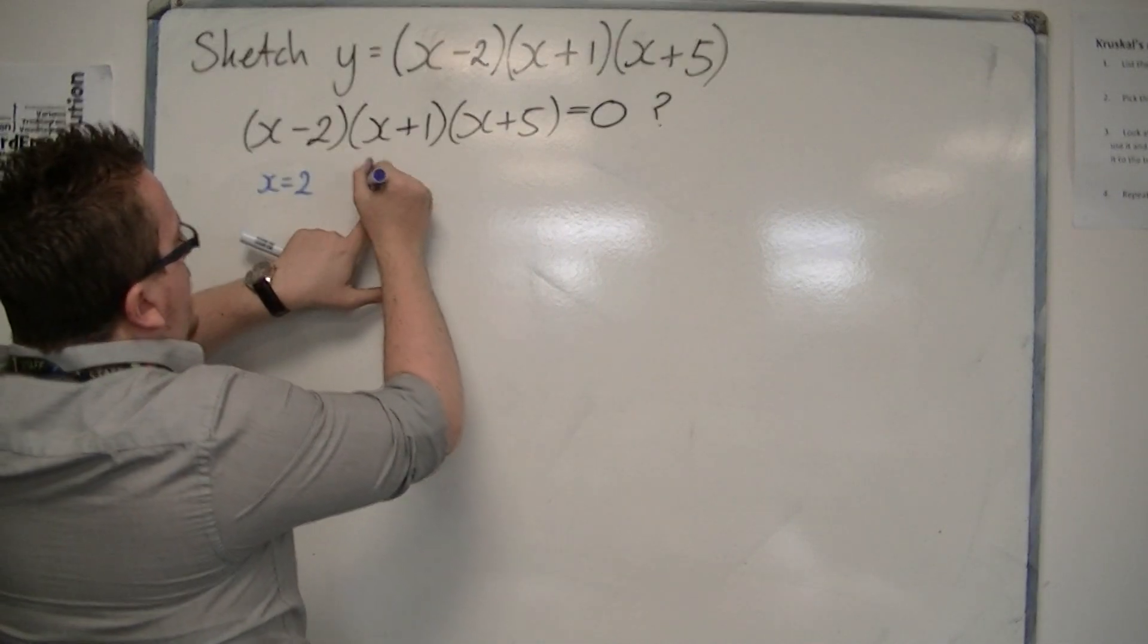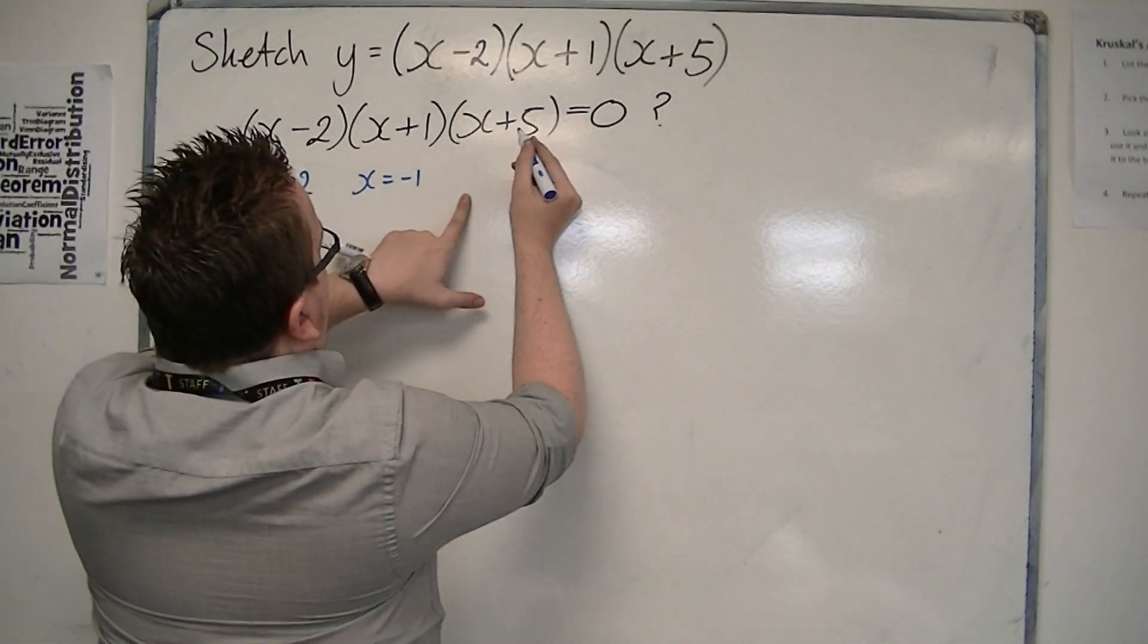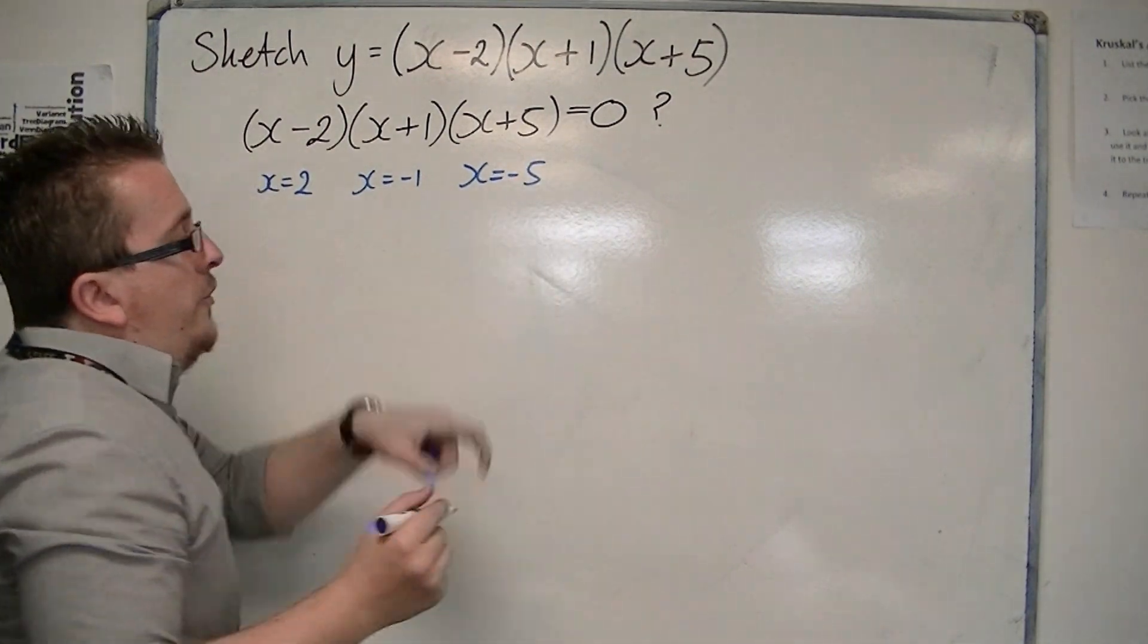If this bracket is zero, then x would have to be minus one, so the whole thing would be zero. And if this bracket was zero, then the whole thing would be zero, so that would be at x is minus five.